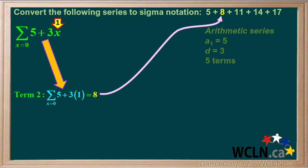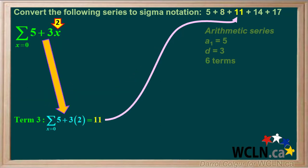For term 2, we'll put in 1 for x and we get 8 as a value for term 2. For term 3, we'll put in 2 for x and we get 11 as a value for term 3.